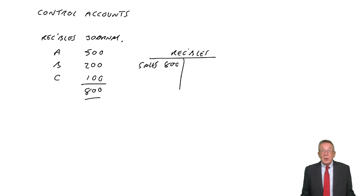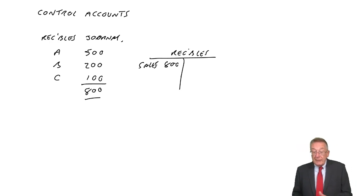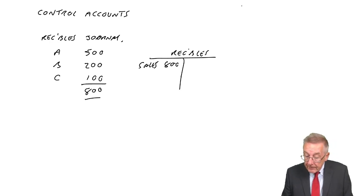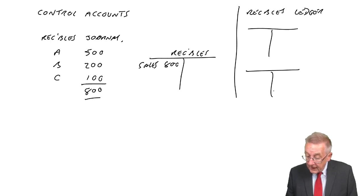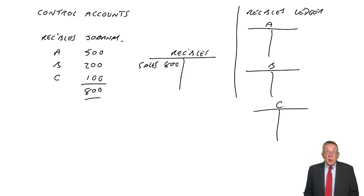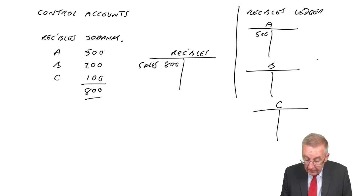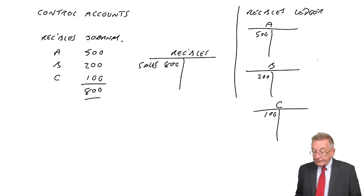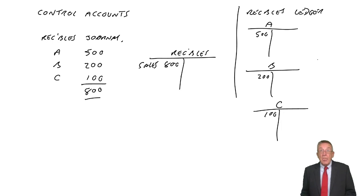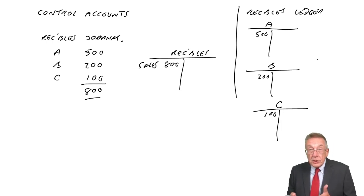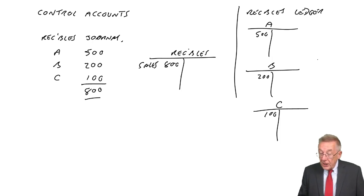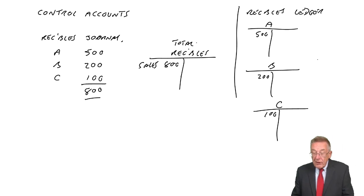So we know what the total receivables are. But to keep track of who actually owes us that 800, we also have the receivables ledger, where we have a little account for each individual customer — Mr. A, Mr. B, Mr. C. We make a note that A owed us 500, B 200, C 100. Remember, the receivables ledger was memorandum only — no double entry there. The actual double entry in the nominal and general ledger: debit total receivables, credit sales.